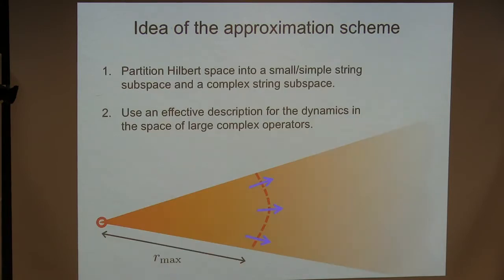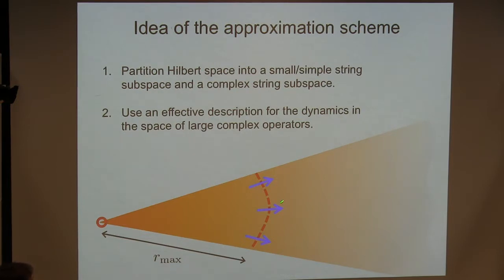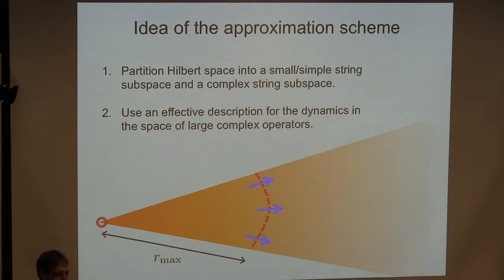This is what allows for diffusion. Not all the operators flow to infinity — for every operator there will be some part that overlaps with the conserved quantity like the Hamiltonian, and that part will have to stay in the region close to the origin. All the non-conserved parts flow away and give dissipation that allows diffusion to occur. The idea of our approximation scheme is: we partition the Hilbert space into small operators — smaller than some distance from the origin — and large operators. We'll try to integrate out what happens to large operators and get an effective description of small operators, with a tuning parameter for the size of this truncation.